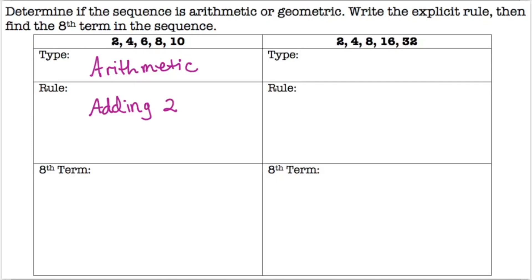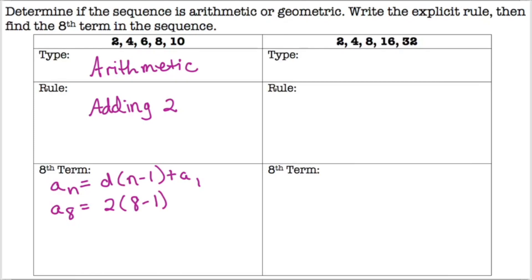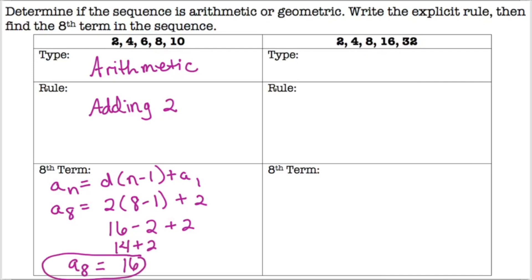The rule is that you're adding 2. To find the eighth term, we use the arithmetic formula: a-sub-n equals d times (n minus 1) plus a-sub-1. Our d is 2, n is 8, and a-sub-1 is 2. So we do 2 times 8 minus 2 times 1, which gives 16 minus 2, plus 2. That equals 14 plus 2, so a-sub-8 equals 16.